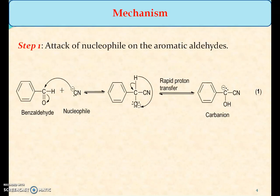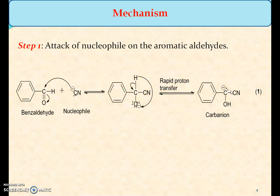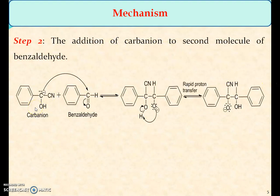The mechanism is categorized in three different steps. In step one, attack of the nucleophilic cyanide ion takes place at the electron-deficient center of benzaldehyde, that is the carbonyl carbon atom. There is a shifting of lone pair of electrons towards the more electronegative oxygen atom. After that, a rapid proton transfer takes place to generate the carbanion, that is carbon with a shared pair of electrons. In step two, the addition of this carbanion containing negative charge on the carbon atom takes place over the carbonyl carbon atom of a second molecule of benzaldehyde, which provides an intermediate ion stabilized by rapid proton transfer.